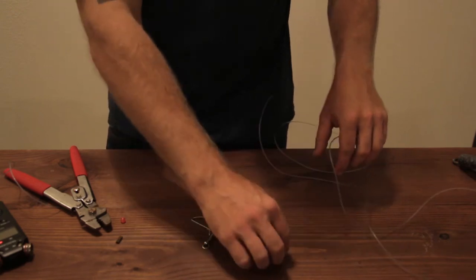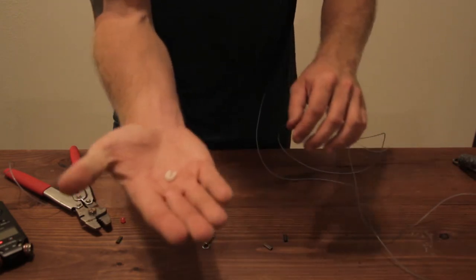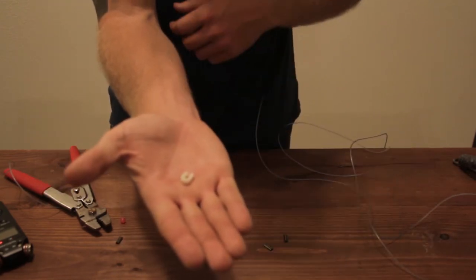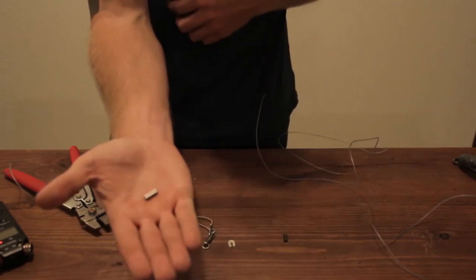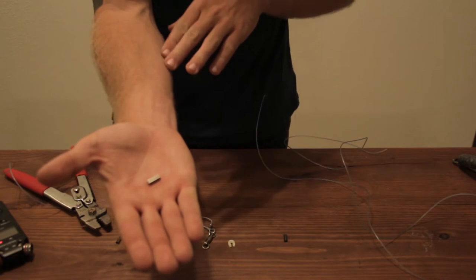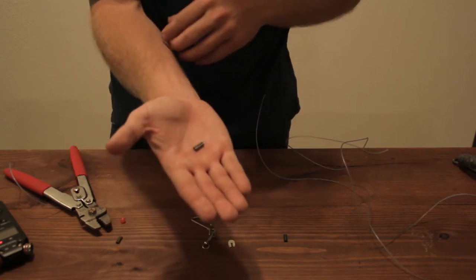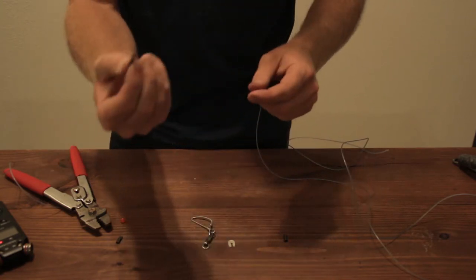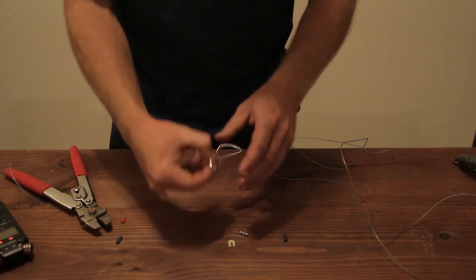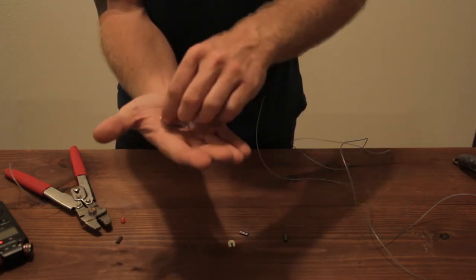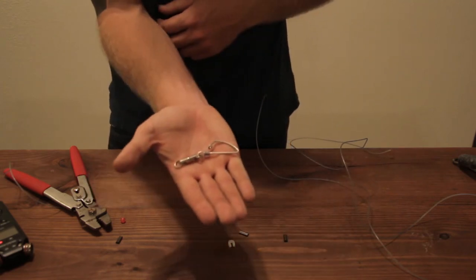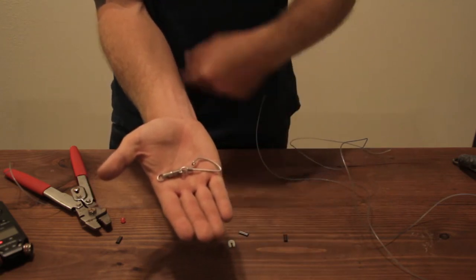You're going to need two plastic or stainless steel thimbles. You're going to need three 1.6 millimeter crimps. If the line doesn't fit in a 1.6 millimeter you can go to 1.9 but if you can use 1.6 definitely do that. You're going to need a heavy duty snap swivel. This is a 350 pound snap swivel. I recommend going at least 350 pound you can go up as high as you want.